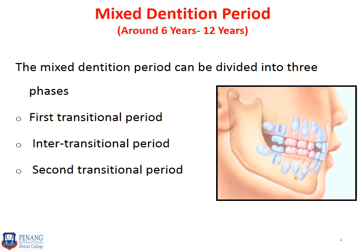The mixed dentition period starts at around six years of age and lasts till twelve years. It begins at six years because that is when the first permanent molar erupts into the oral cavity alongside the primary dentition, and it ends at twelve years when primary teeth are still present along with the permanent dentition. This phase is divided into three periods: the first transitional period, the intertransitional period, and the second transitional period.